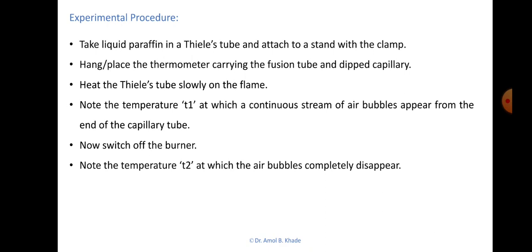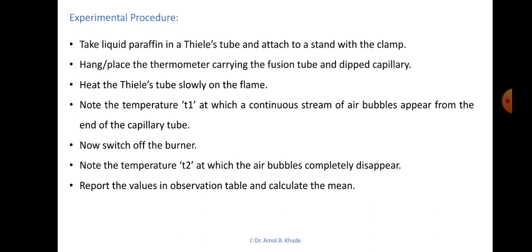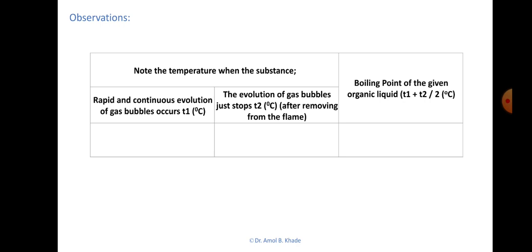Once you observe a continuous stream of air bubbles, immediately switch off the Bunsen burner. Then note the temperature T2 at which the air bubbles from the capillary end disappear. Record T1 and T2 in the observation table: T1 is when rapid and continuous gas bubble evolution is observed; T2 is when bubble evolution just stops after removing the flame. The boiling point is the mean of T1 and T2, i.e., (T1 + T2) / 2.